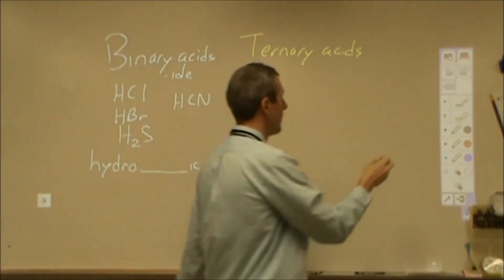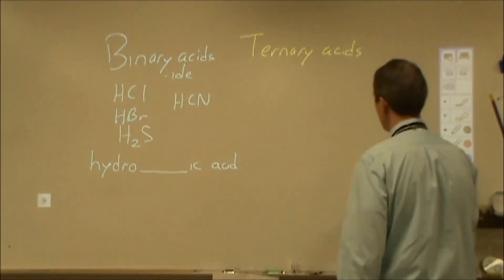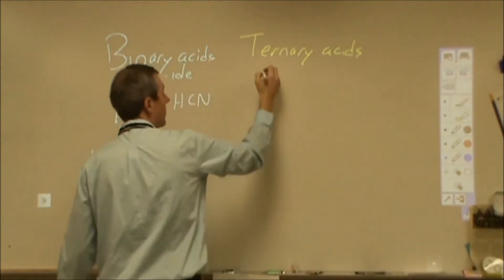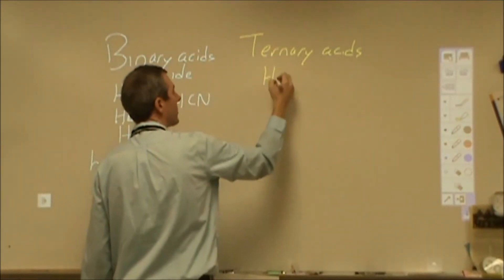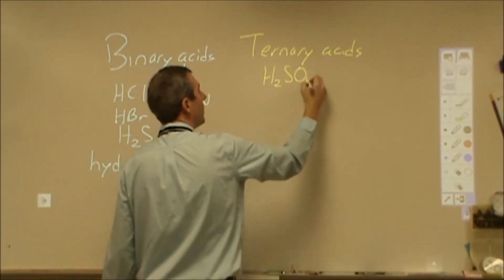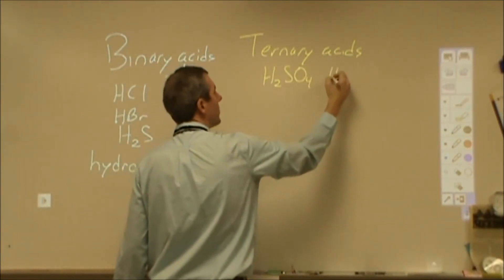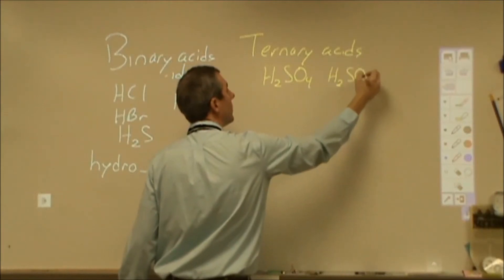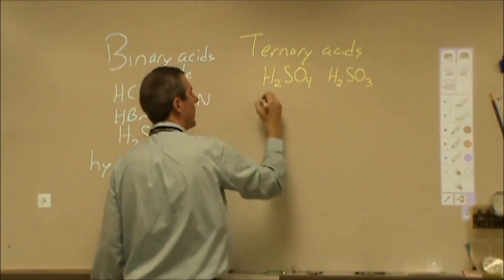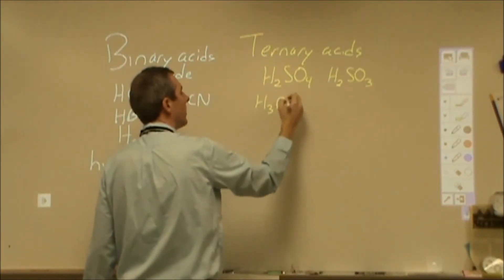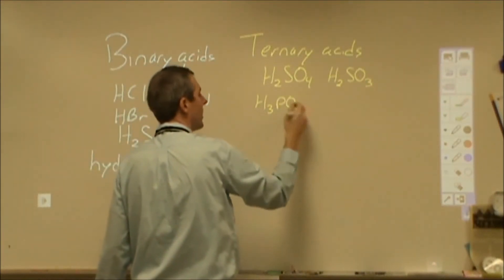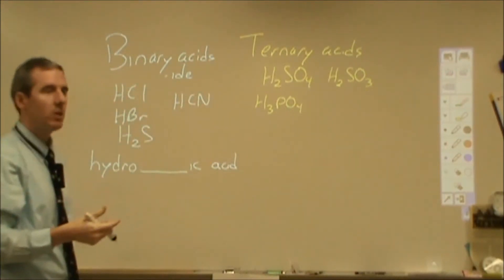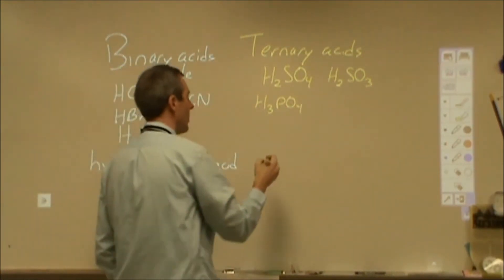On the flip side, if you have ternary acids, this is when you're going to have your polyatomic ions. So now you're going to see things like H₂SO₄, H₂SO₃, H₃PO₄, things of that nature. Now there are two things that happen in ternary acids.